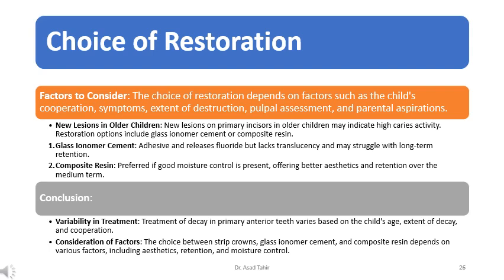Conclusion: treatment of decay in primary anterior teeth varies based on the child's age, extent of decay, and cooperation. The choice between strip crowns, glass ionomer cement, and composite resin depends on various factors including aesthetics, retention, and moisture control.